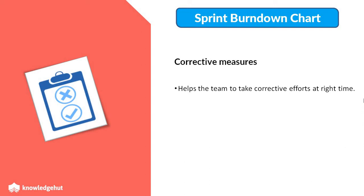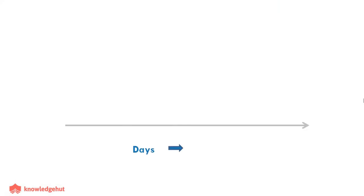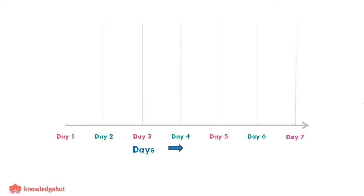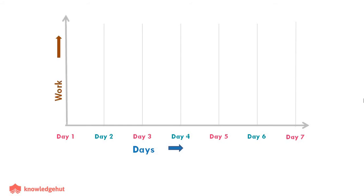Now let us have a look at the Sprint Burn Down Chart itself. The x-axis on the chart represents the number of days in the sprint. Suppose the target to finish the work is 7 days, then all 7 days will be plotted individually on the x-axis. The y-axis on the chart represents work, which is generally represented as story points. Story points are nothing but the estimate of efforts required to complete the task.